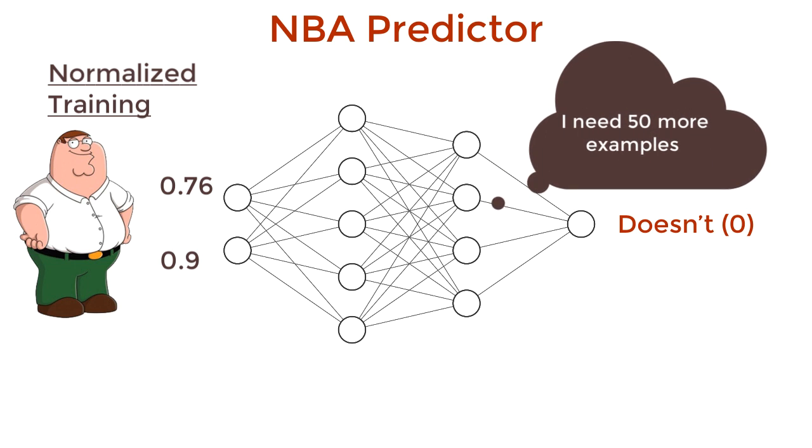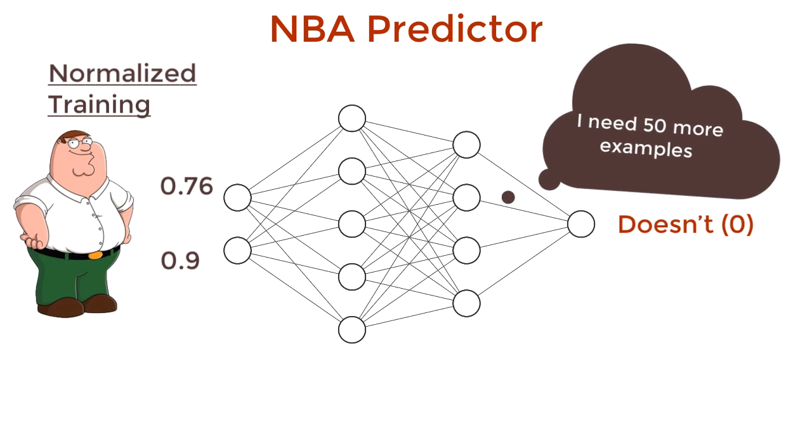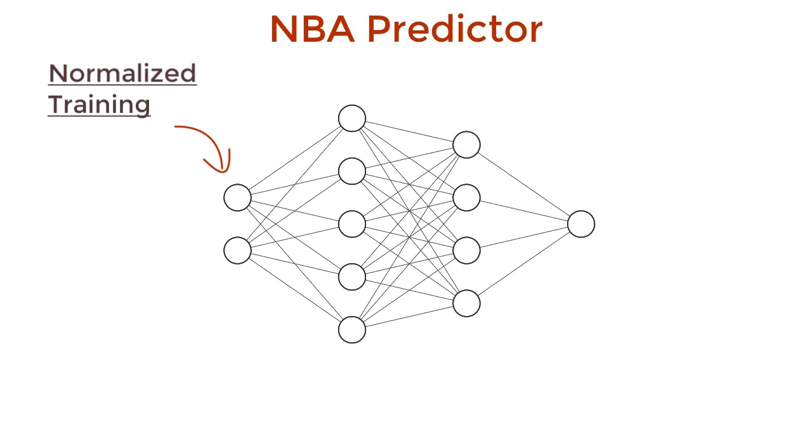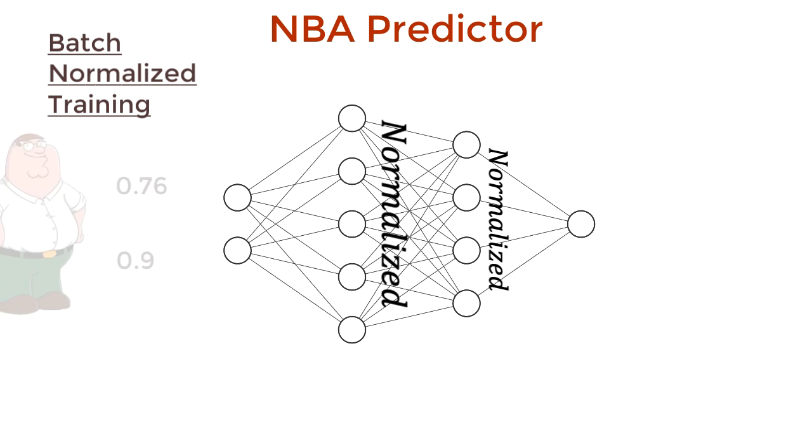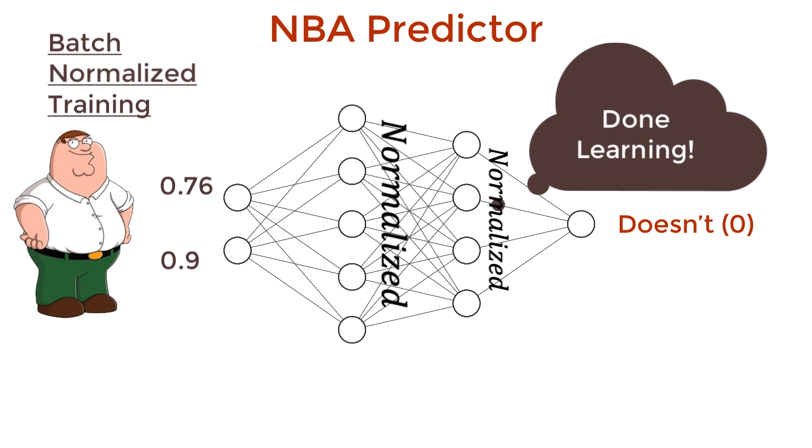This network learned much faster reaching the same loss minimum. So if normalizing the input actually works, then why not normalize the activations in every layer with batch normalization? A.I. makes it. Giannis makes it. LeBron makes it. Peter doesn't make it. I'm done. Time to test.